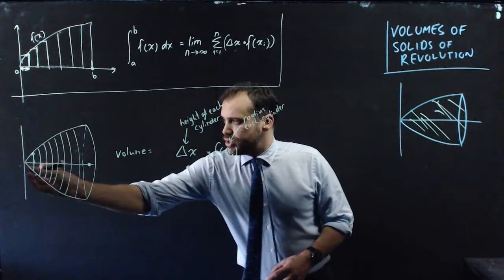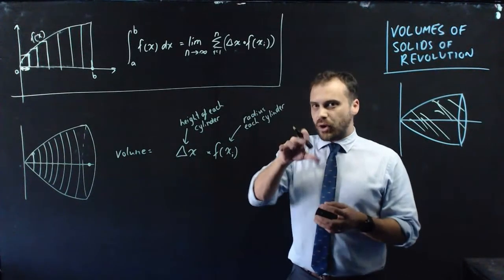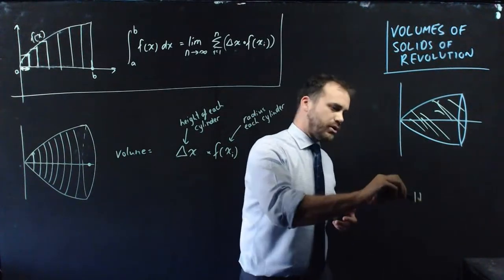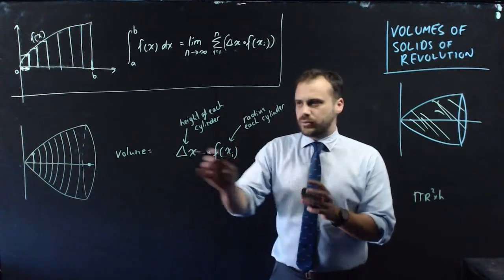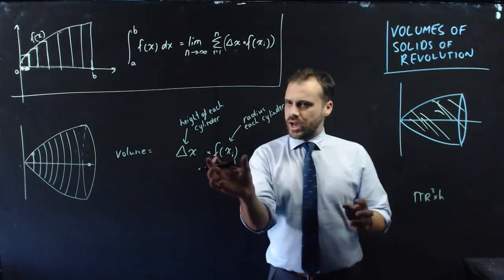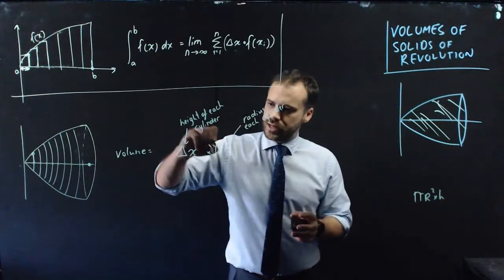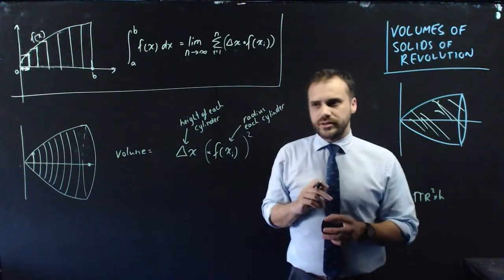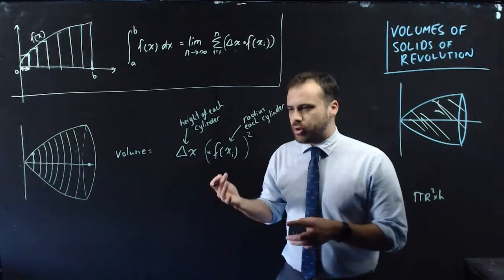Now remember, each of these is a cylinder. And to find the volume of a cylinder, it's pi r squared times height. So what do I have here? Well, I have a height and I have a radius. Now, I need to take that radius and I need to square it. And then, what else am I missing? Pi. I need to multiply by pi.